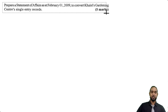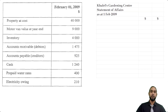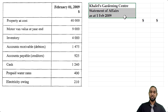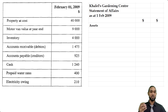The first thing they want us to do is to prepare a statement of affairs as at February 1, 2009 to convert Kalel's Gardening Center's single entry records. So they want a statement of affairs — basically that's like a very summarized balance sheet, with the point of it being a calculation of capital, a showing of assets and liabilities with the difference showing the capital. Be sure to head up your statements properly: Kalel's Gardening Center, statement of affairs as at 1 February 2009. There's no particular order required — it's not a balance sheet, so there are no hard and fast rules.